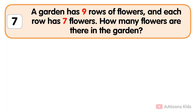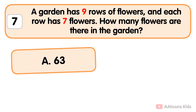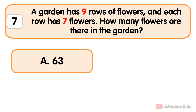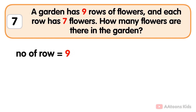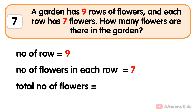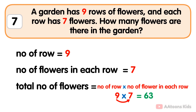A garden has nine rows of flowers and each row has seven flowers. How many flowers are there in the garden? 63. The total number of rows is nine, the number of flowers in each row is seven. To find the total number of flowers, simply multiply the number of rows by the number of flowers in each row. Nine multiplied by seven is 63, so the total number of flowers in the garden is 63.